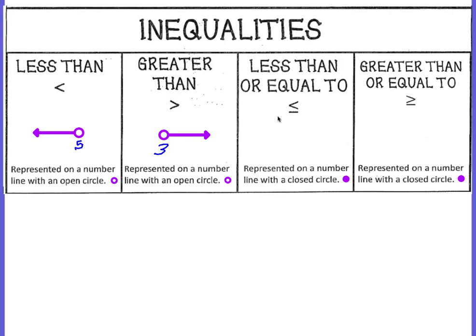Then you have a less than or equal to. On a number line, the circle is going to be filled in because it's equal to the number. If you're saying that it's less than or equal to 3, the circle goes on 3 on the number line. You fill it in because 3 is a solution — the solution also equals 3. And then because it's less than, your line goes to the left.